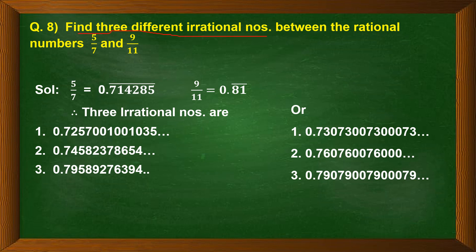5/7 and 9/11 are both rational numbers of the form p/q. Let us first convert them into decimal form.